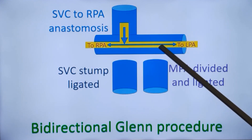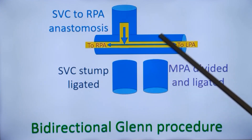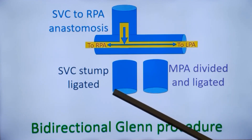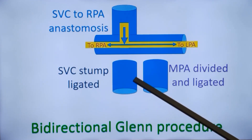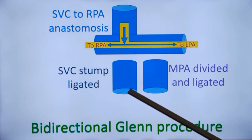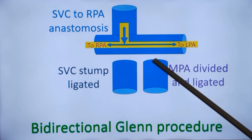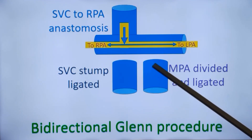There is a disadvantage: systemic venous pressure goes up, and there could be development of systemic venous collaterals later on. Some patients may also develop pulmonary arteriovenous malformations later on.